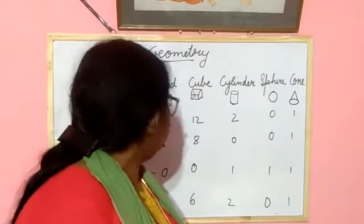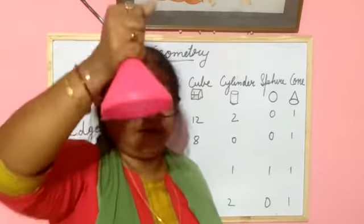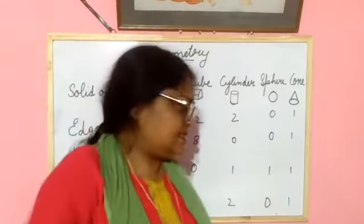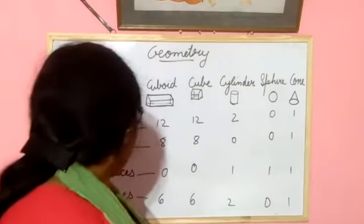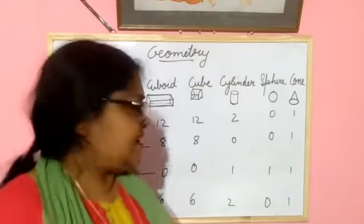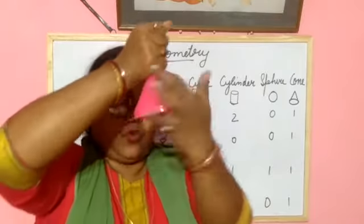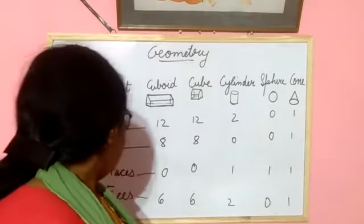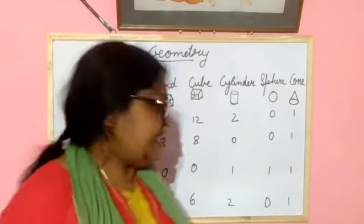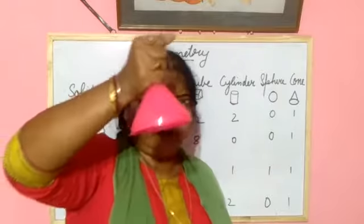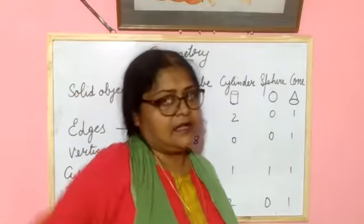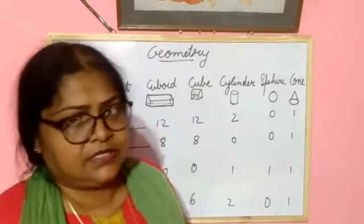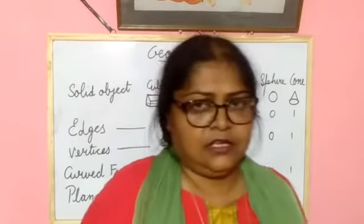In a cone, how many vertices? 1 vertex. How many curved faces? 1 curved face. And how many plain faces? 1 plain face. Understood? So it is clear to you all.